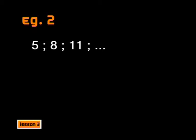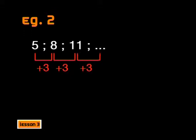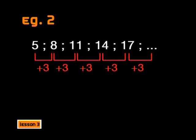Now I want you to look carefully at this next sequence of numbers. Can you determine what the common difference is, and also what the next three terms would be? 8 is 3 more than 5, so the difference between these terms is 3. Then 11 is 3 more than 8, so the difference is also 3. The next terms should be 11 plus 3, which is 14; then 14 plus 3, which is 17; and so on to give us 20.